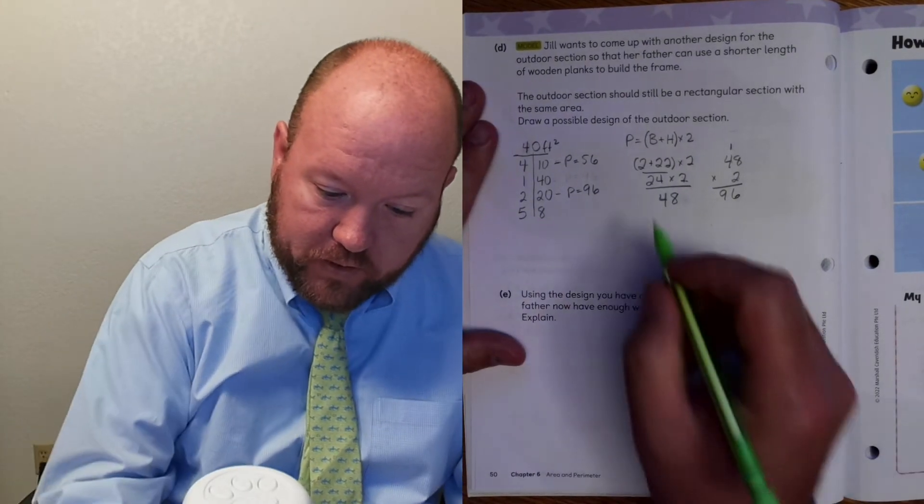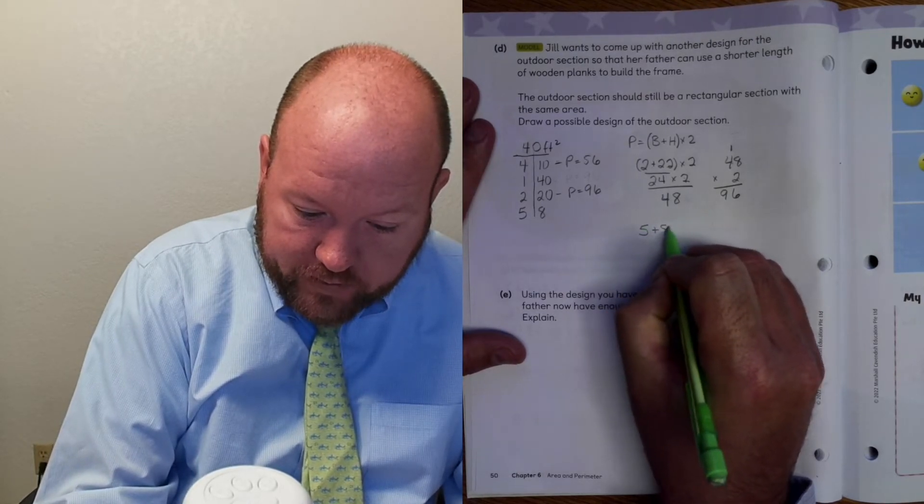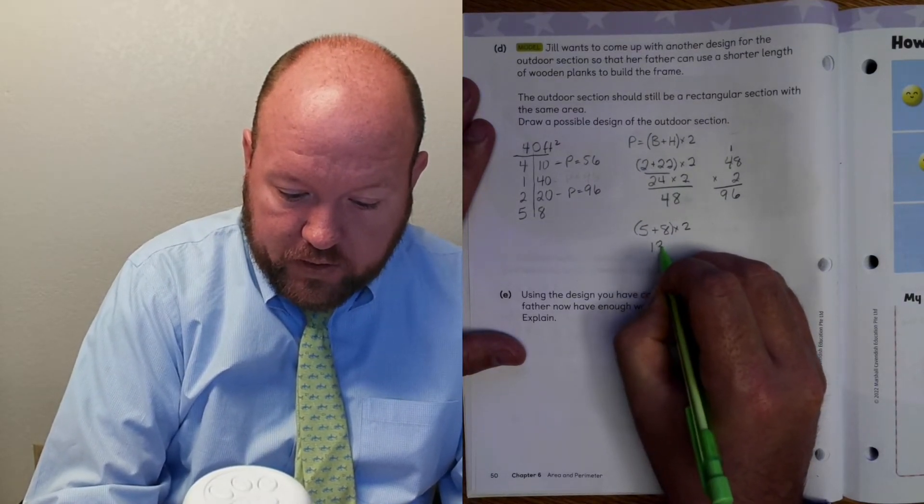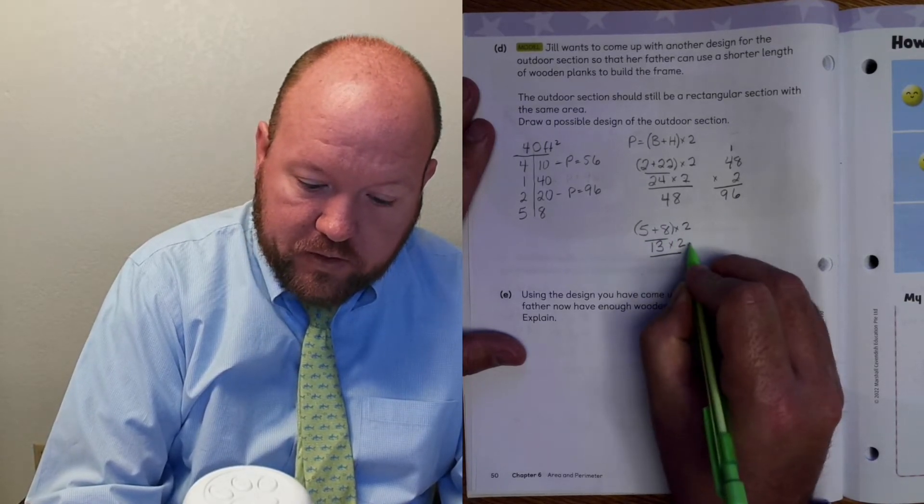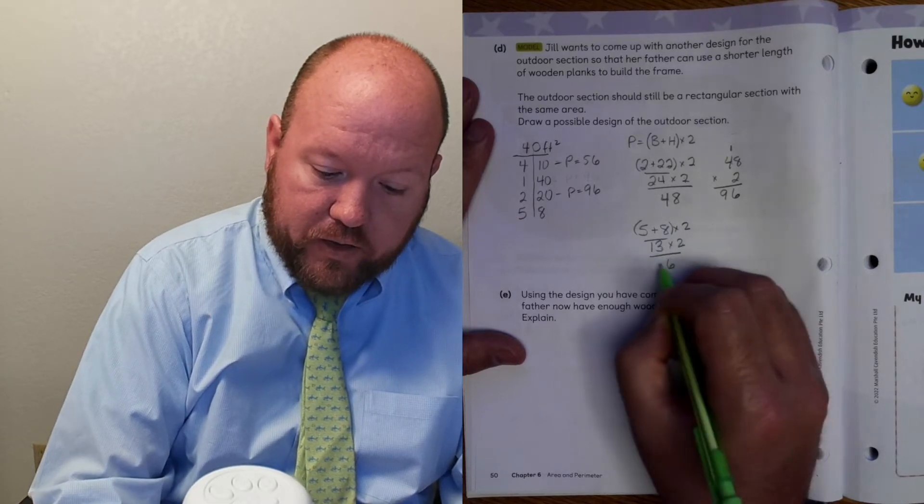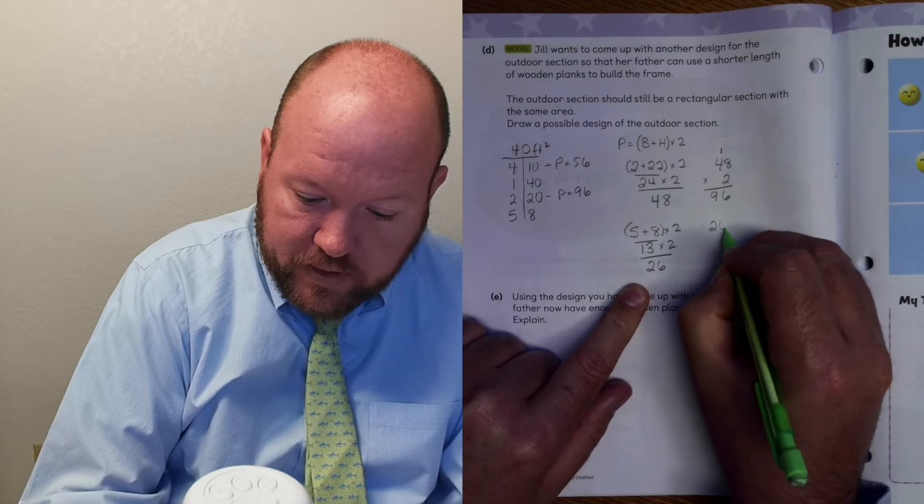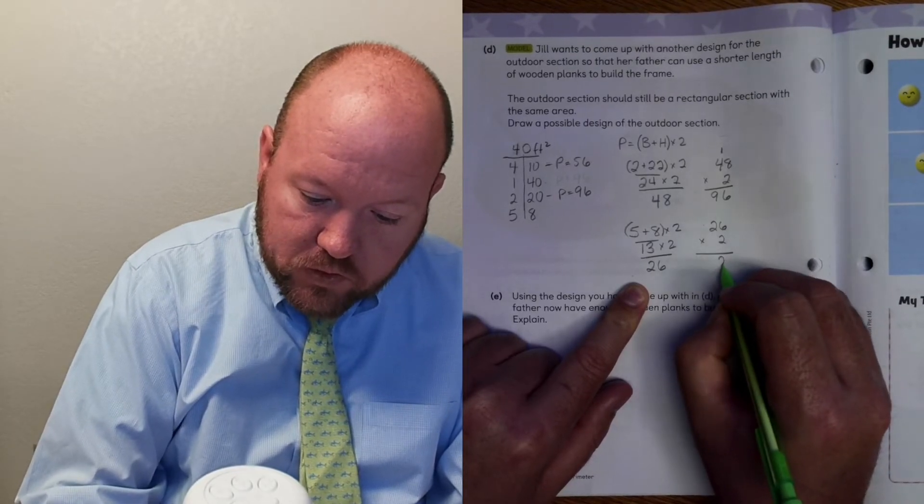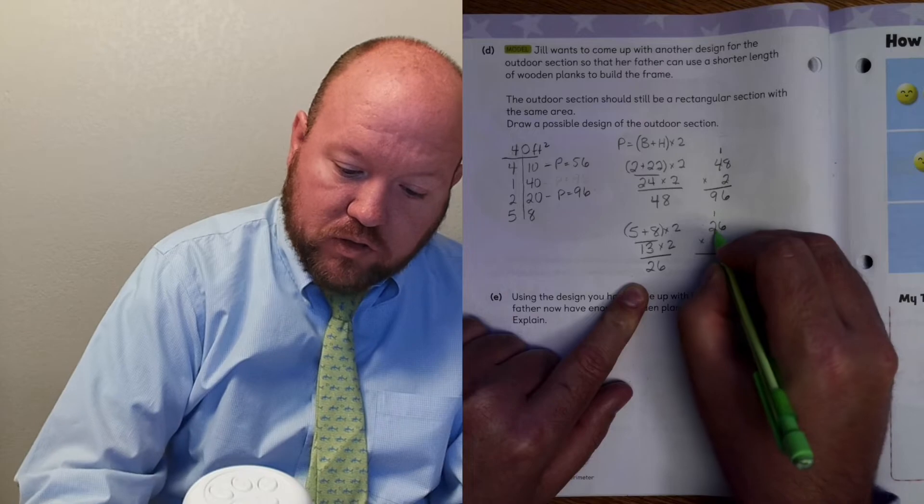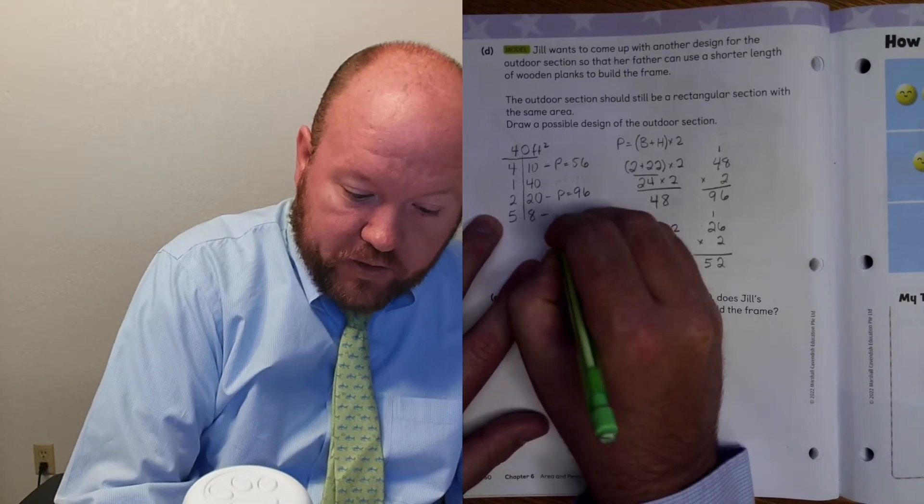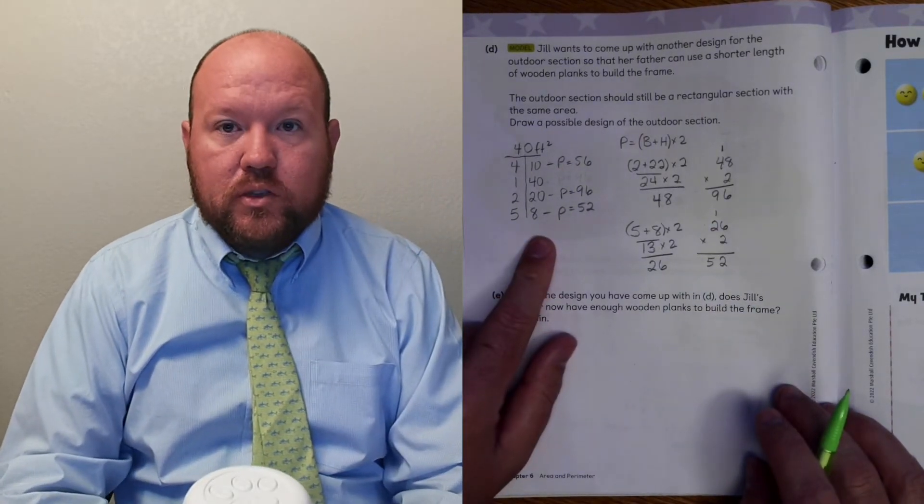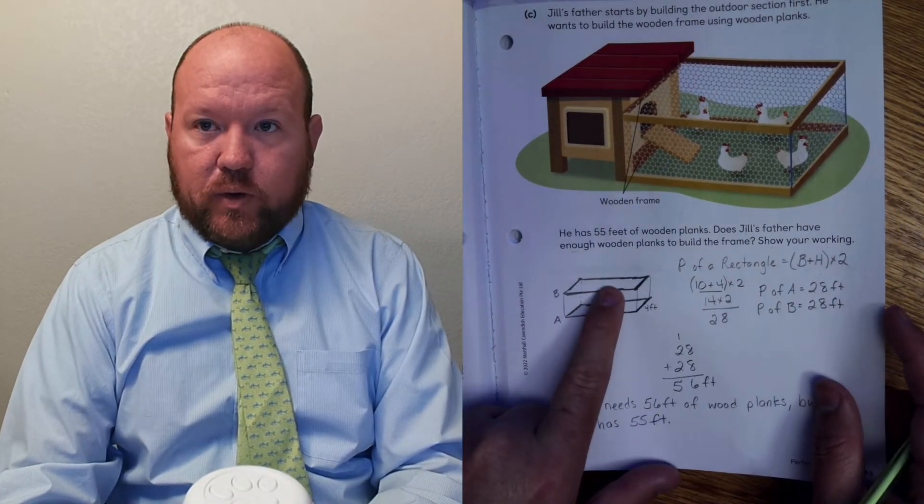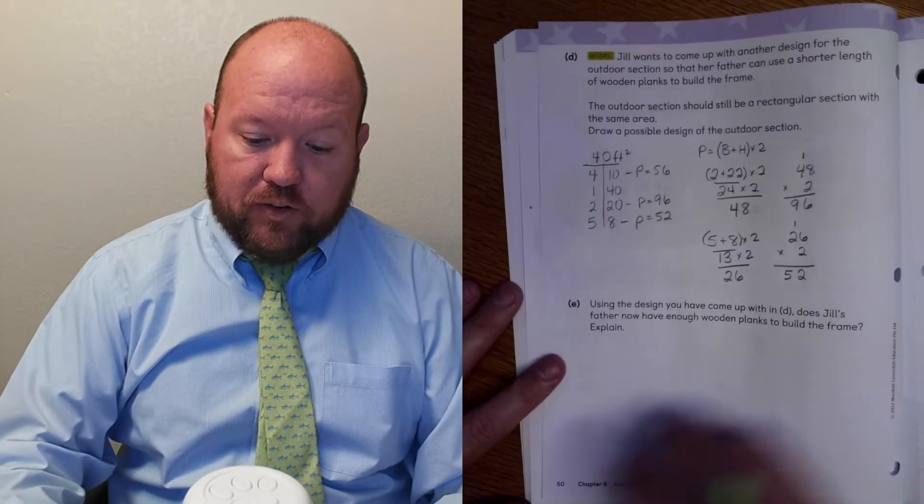So let's try a 5 by 8. So here would be 5 plus 8 times 2. 5 plus 8 is 13 times 2, which is 26. Now we need to multiply 26 times 2. 2 times 6 equals 12. 2 times 2 equals 4, plus 1 equals 5. So that equals 52. So now we have a perimeter equals 52 for both of those. 26 plus 26 equals 52. That's enough wood.